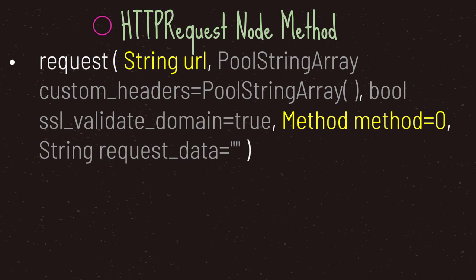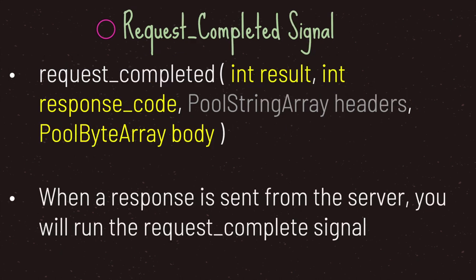The request method takes in five arguments. The ones highlighted in yellow are the ones you will most likely need to edit for basic usage. The first argument is the string URL of the data you wish to access — this will most likely be your API. In the fourth argument, you can set what type of method request you'd like to send to the server. The fifth argument is equally important if you're using POST or PUT, and that is the request data you wish to send to the server so that it can properly update, create, or edit itself. Once a request has been sent, the server will respond back, and the HTTP request node will then call the request completed signal.